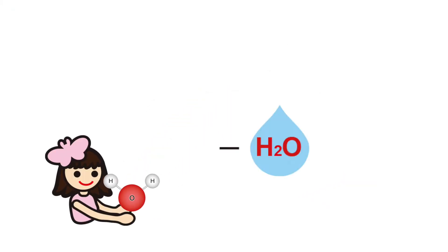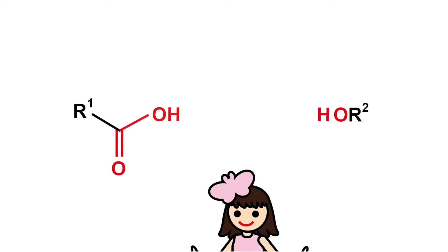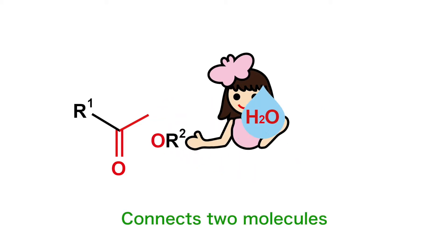MNBA causes a reaction called dehydration condensation, which takes H2O, or water, from molecules. It can take OH from a molecule, H from another molecule, and connect the two molecules.